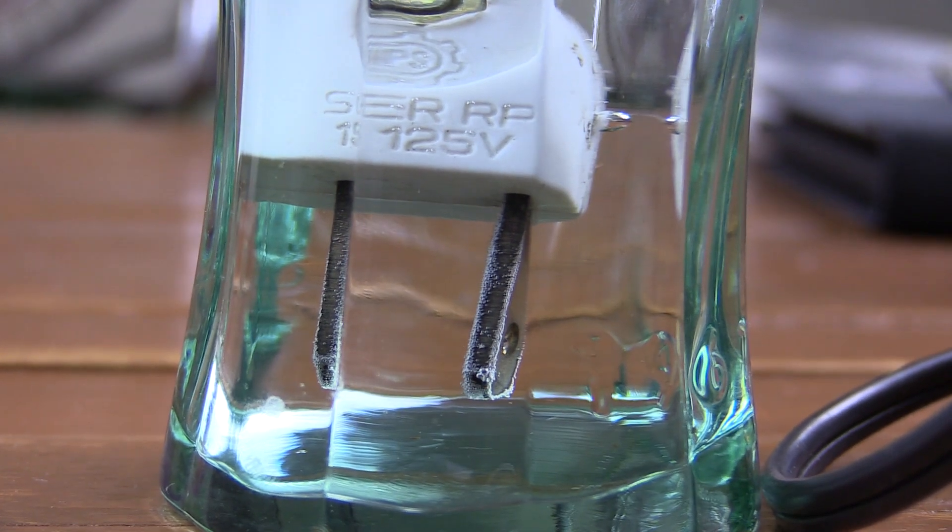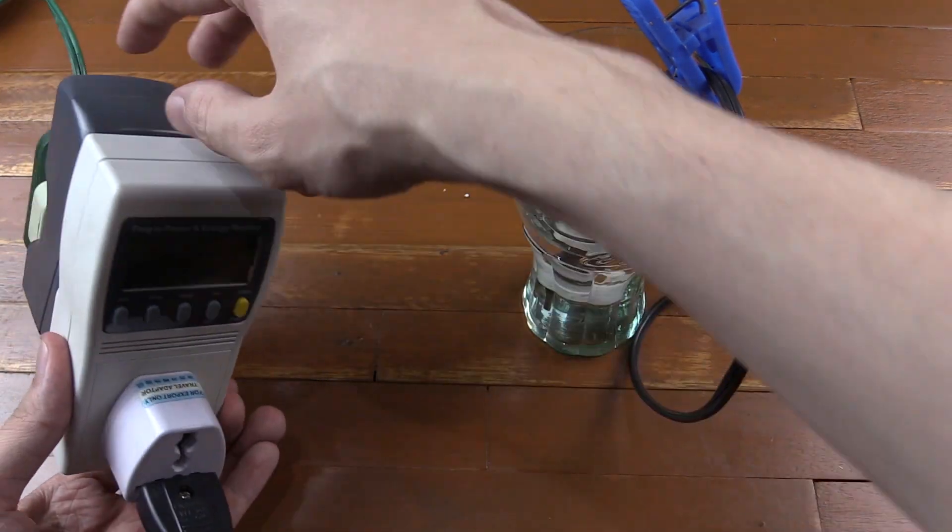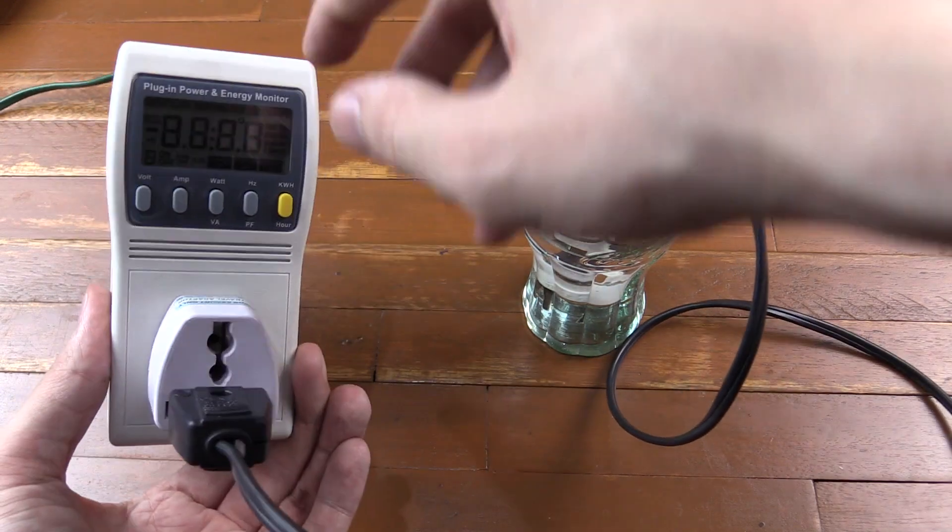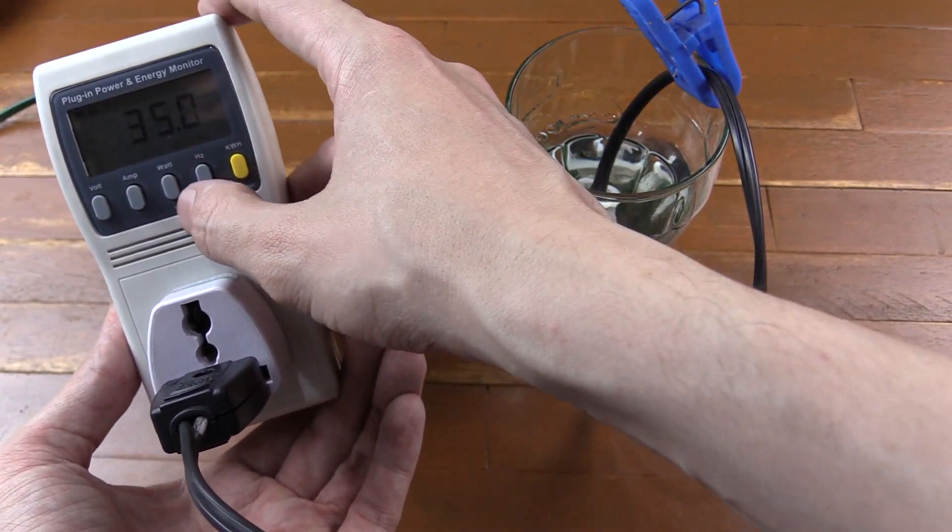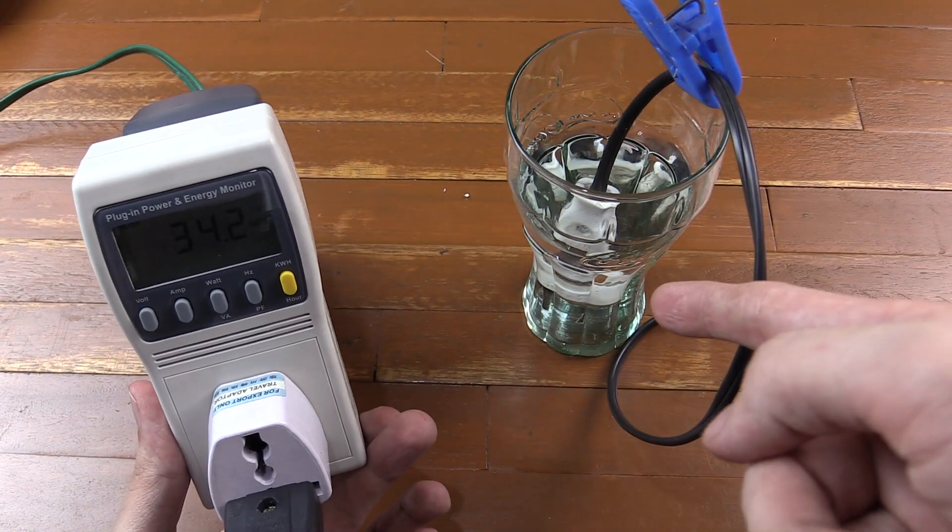What I'll do is I'll plug in a wattmeter so we can see how much power this is actually consuming. So I've now plugged my wattmeter into my GFCI socket and I'll just press the button to turn on the socket and swap to watts. So you can see we're only consuming around 35 watts.